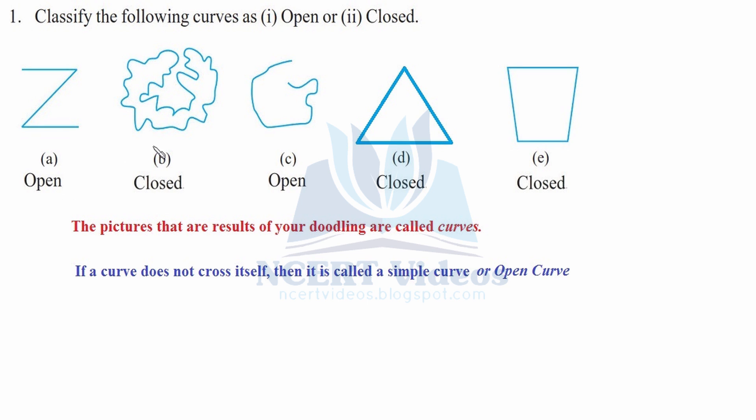So A is open, B is closed, C is open, D is closed, and E is closed as well. This was your question number one.